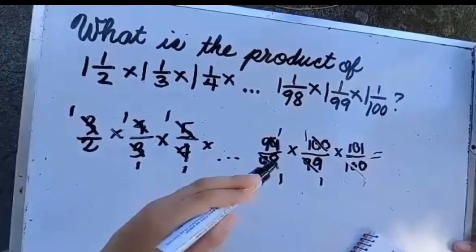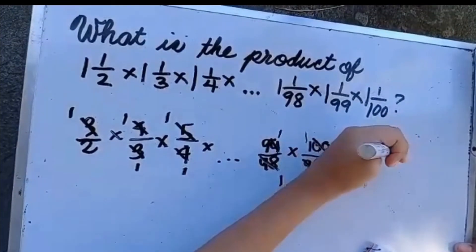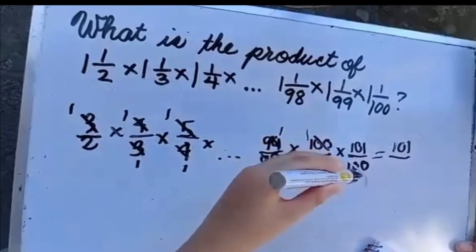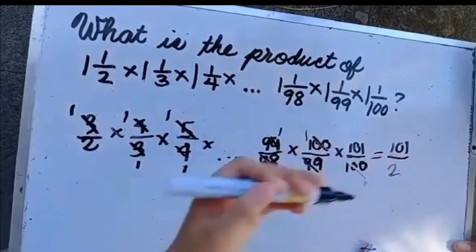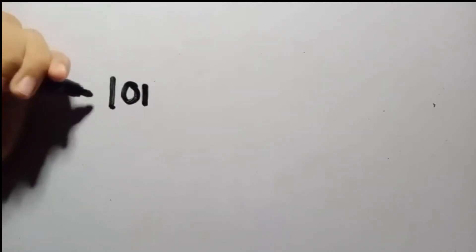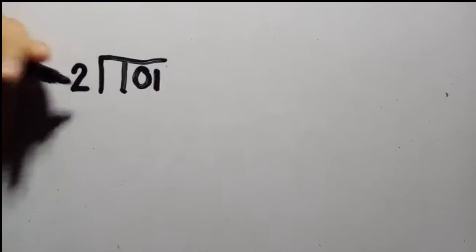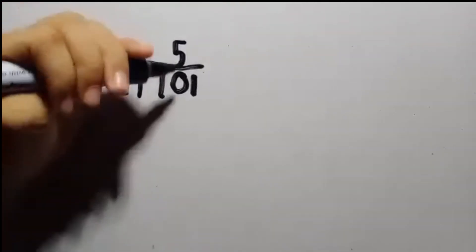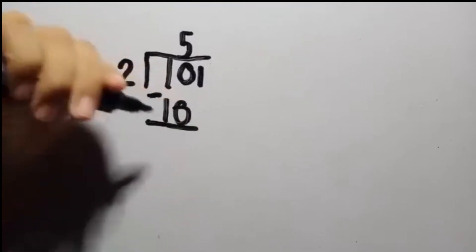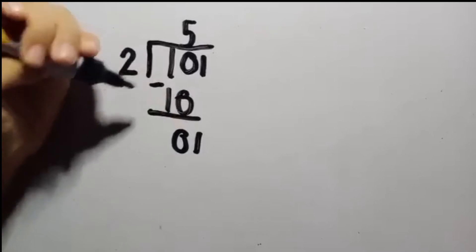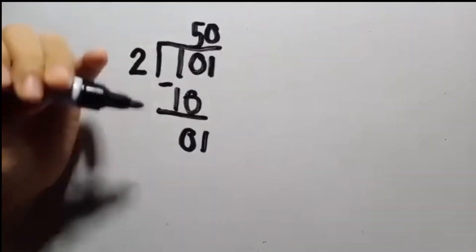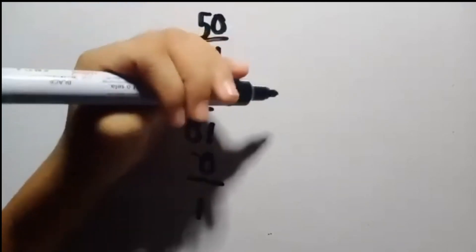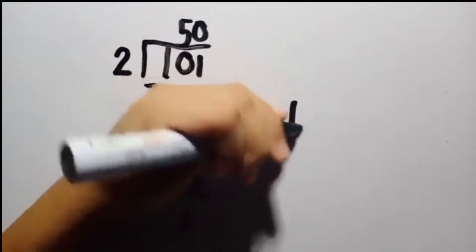After cross-cancellation, 1 times 1 times 1 times 1 times 1 times 101 equals 101 on the numerator, and 2 times 1 times 1 times 1 times 1 equals 2 on the denominator. Then change 101 over 2 to mixed form. The answer to our problem is 50 and 1 half.